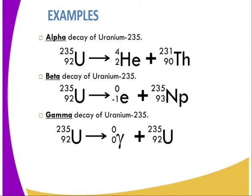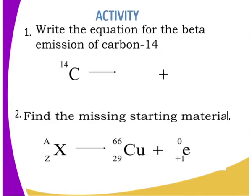Looking at examples: uranium-235 with atomic number 92 undergoes alpha decay to give thorium with atomic number 90 and mass number 231. Beta decay of uranium yields a new nuclide whose mass number does not change but atomic number increases by 1. Gamma decay of uranium yields a nuclide with the same composition, since there is no change in mass number or atomic number.